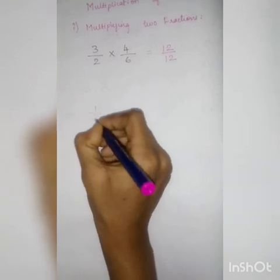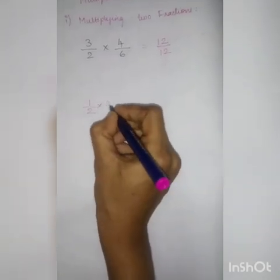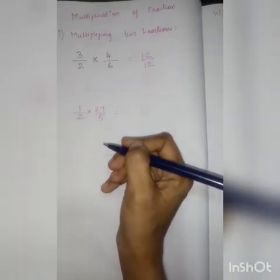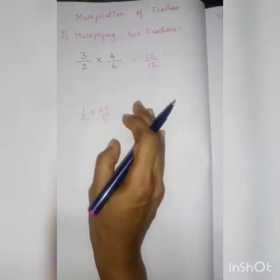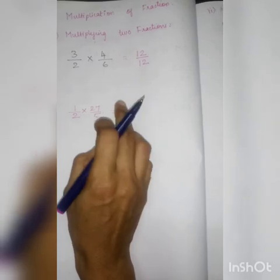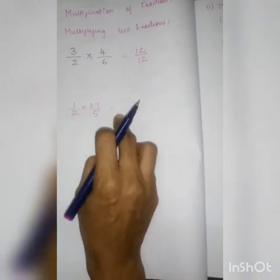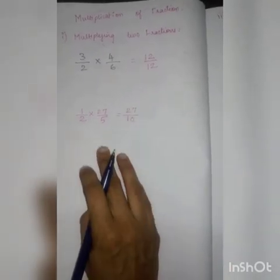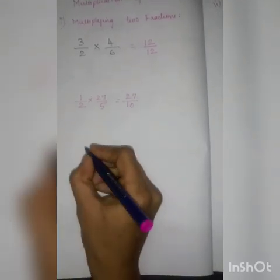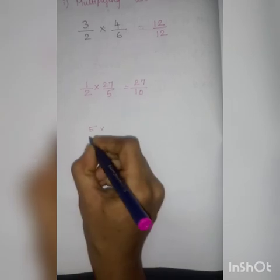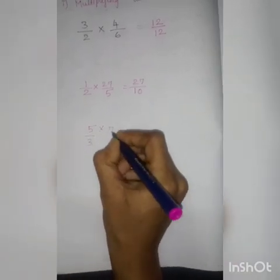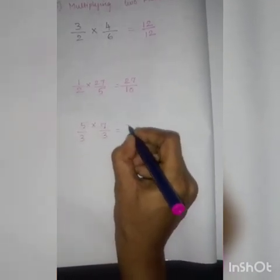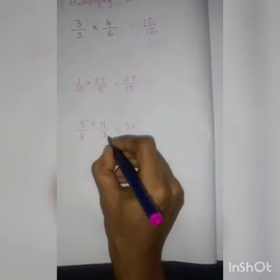One more problem: 1 by 27 into 5 by 2. Multiply numerator into numerator: 1 into 27 is 27. Denominator into denominator: 5 into 2 is 10. Answer is 27 by 10. Another example: 5 by 3 into 7 by 3. Multiply numerator into numerator: 7 into 5 is 35. Denominator into denominator: 3 into 3 is 9. Here both denominators are the same, but no special condition — just multiply denominator into denominator: 3 into 3 is 9. Answer is 35 by 9.